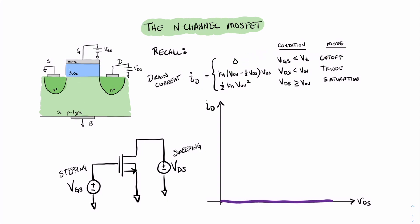If VGS is less than the threshold voltage, we're in cutoff and the current will be zero — we start at the origin and go along the horizontal axis. When VGS rises above the threshold voltage, we're in either triode or saturation. If VDS is relatively small compared to VGS, as on the left side of the curve, we're in triode mode. The triode equation starts out fairly linear but has a square term that reduces the value, so the curve starts linear and then slowly decreases in slope. At some point, VDS exceeds the overvoltage and we move into saturation, where the equation is no longer dependent on VDS — the curve flattens out.